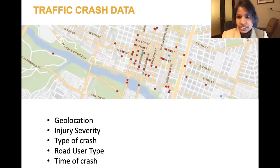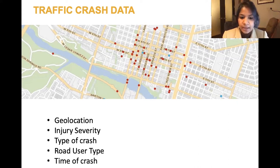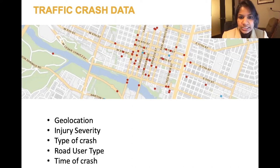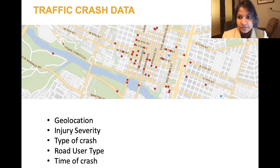There are three data sources that we primarily use. One of the most important is traffic crash data. When using traffic crash data it is really important that it has certain features. On the map here you see data of scooter crashes in Austin, Texas — this data is geolocated. If data is aggregated up to a neighborhood or district level, it's very hard to have targeted interventions. Crash severity is also very important — the severity data in this case was obtained from hospital records, so we know how severely the victims were injured.